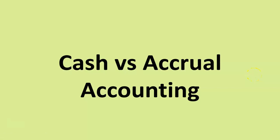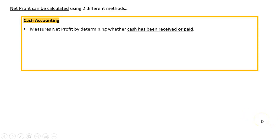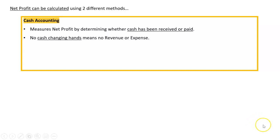As we move into the next phase of the course we need to talk about the difference between cash and accrual accounting. Net profit for a business can be calculated using two different methods. The first one is cash accounting, which measures net profit by determining whether cash has been received or paid. If no cash changes hands, there are no revenues or expenses.